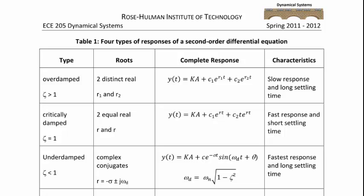When the characteristic polynomial has two equal real roots, the response is critically damped, meaning zeta equals one. The complete response is y of t equals ka plus c1 e to the rt plus c2 t e to the rt, and the response is fast with a short settling time. When the polynomial has complex conjugate roots, r equals negative sigma plus or minus j omega_d, the response is underdamped with zeta less than one. The complete response is y of t equals ka plus c e to the negative sigma t times sine of omega_d t plus theta, where omega_d equals omega_n times the square root of one minus zeta squared. This response is the fastest but has a long settling time.